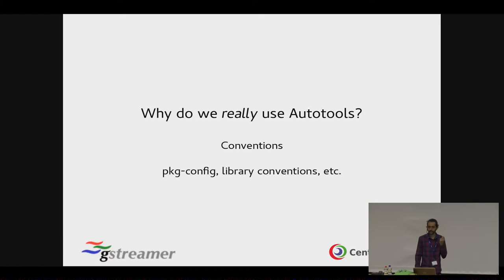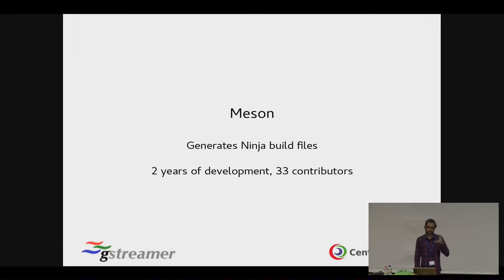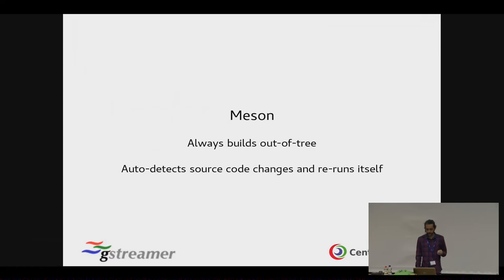But now we have an alternative, and it's called Meson. Meson is written in Python 3. It generates build files which generate Ninja build files, which then uses Ninja to compile everything. It's had two years of development and about 33 contributors. The usage is really simple — you make a build directory, run meson, then run ninja. It always goes out of tree. The source code changes, so you can just type ninja and it'll reconfigure if required, and it'll only rebuild whatever is changed.